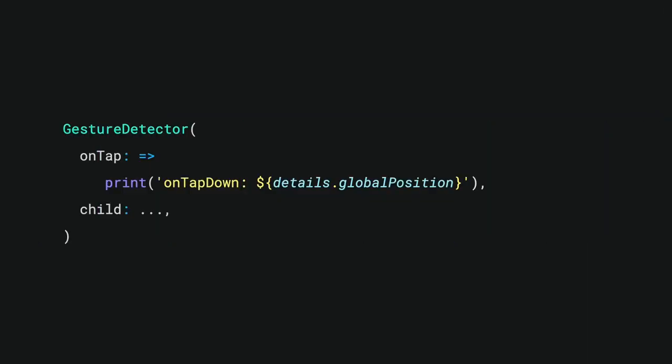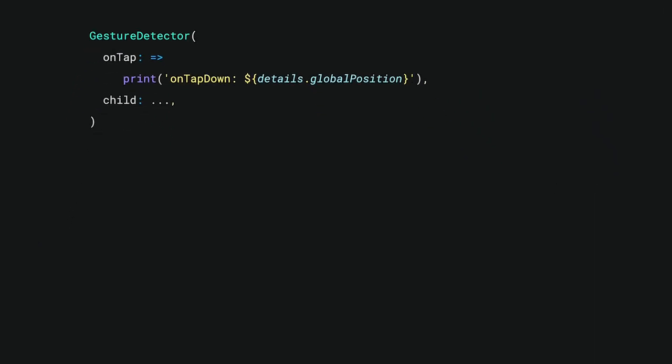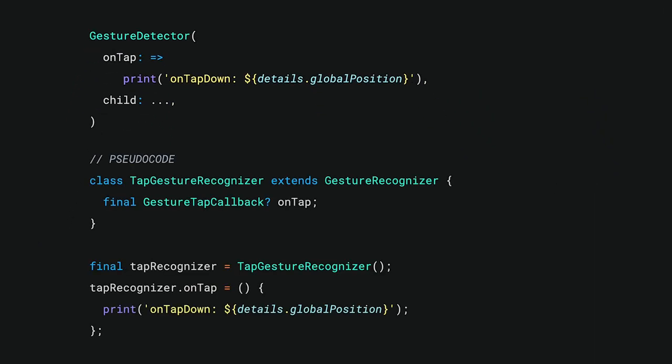Behind the scenes, when you register a listener with a gesture detector, it spins up a specialized gesture recognizer and attaches your listener. So when we write this code, Flutter turns it into this. That TapGestureRecognizer class knows how to tell if raw interaction data is a tap, and it has a pointer to the code you want it to run when it recognizes one.